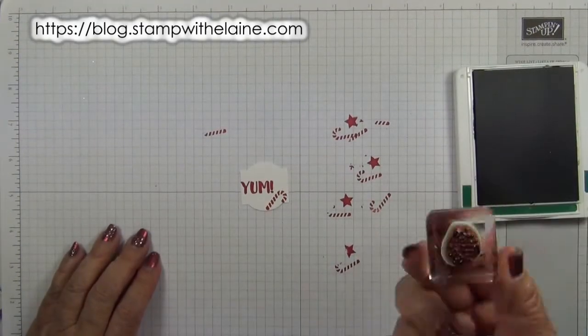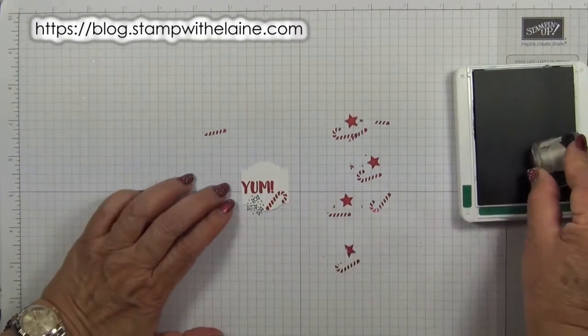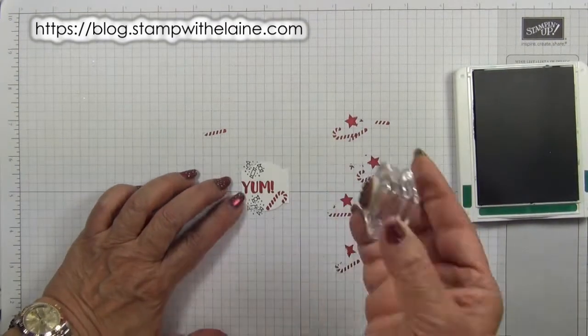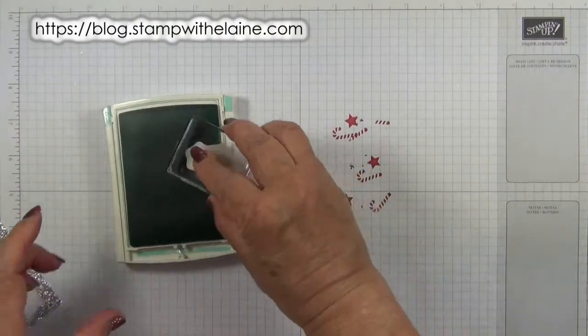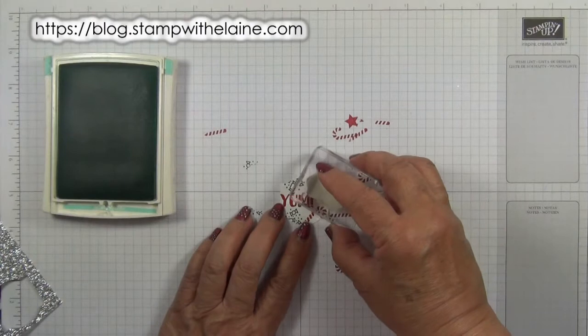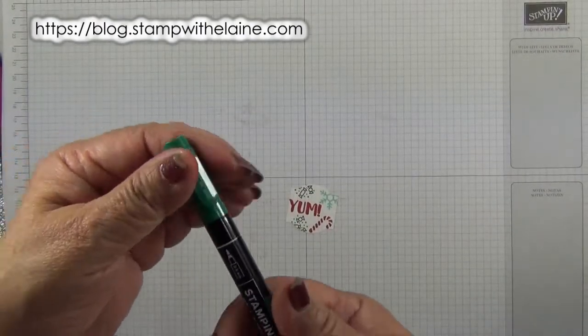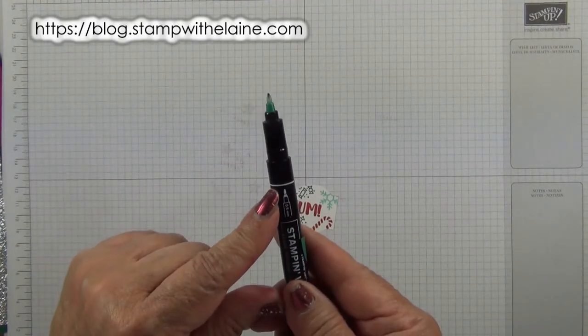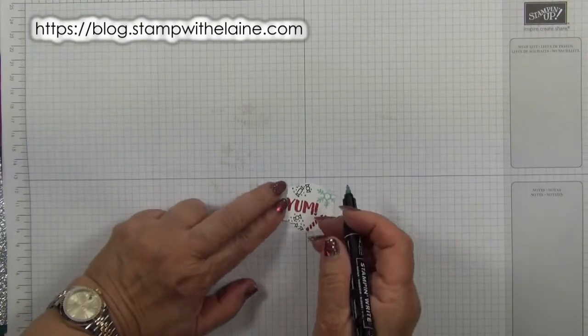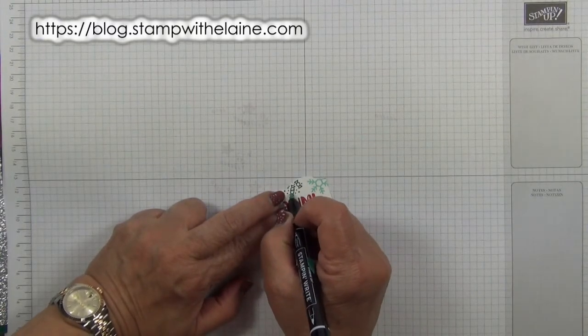Change ink pads to Shaded Spruce and stamp the sweets. Change ink pads and this time only ink up the snowflake and stamp it in the corner there. Next take the journaling end of the marker pen and just draw a couple of lines on the sweet.